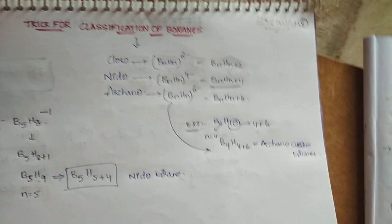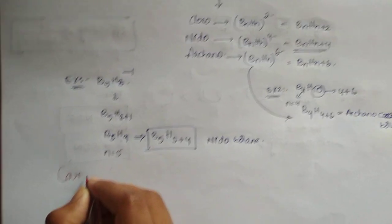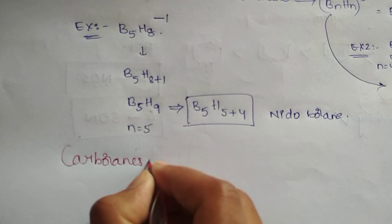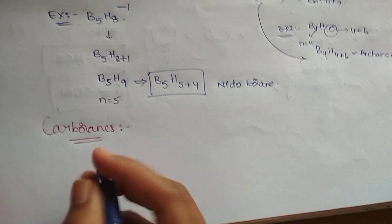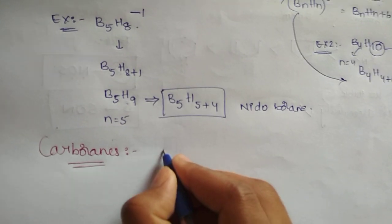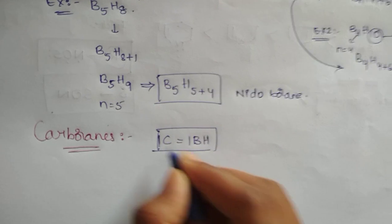If you consider the carboranes, it is also very simple, just like this only. But here you have to remember that one carbon is equal to one BH.